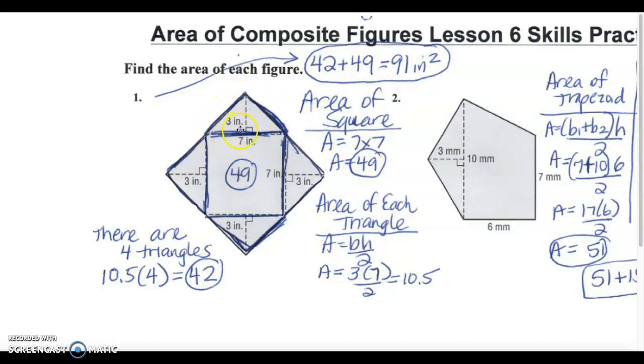After I found the area of the square I saw that there were four triangles. There's one here, I'm outlining them. There's one here, there's one down here and there's one on the side. I saw that all four triangles were equal. So I knew if I found the area of one of them I would just times it by four to get all four combined.